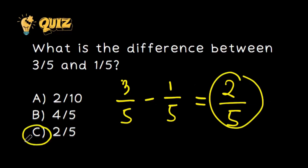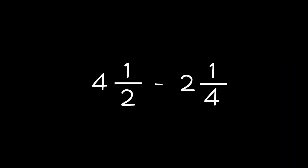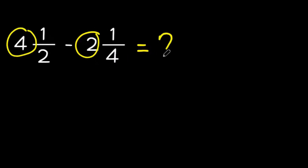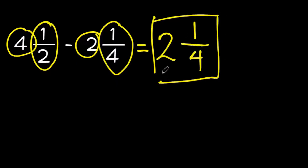You're mastering subtraction with rational numbers like a pro. Now let's explore how to subtract mixed numbers. If we have 4 and 1 over 5 and 2 and 1 over 5, how do we find their difference? To subtract 2 and 1 over 5 from 4 and 1 over 5, we first subtract the whole numbers: 4 minus 2 equals 2. Then we subtract the fractions: 1 over 5 minus 1 over 5. The difference between 4 and 1 over 5 and 2 and 1 over 5 is 2 and 1 over 5.